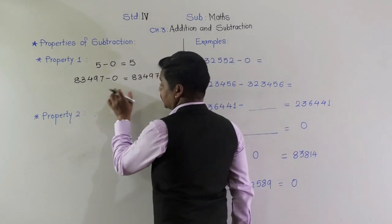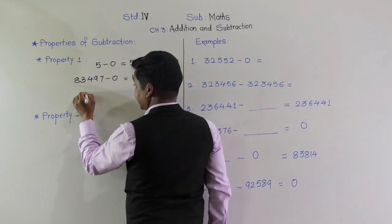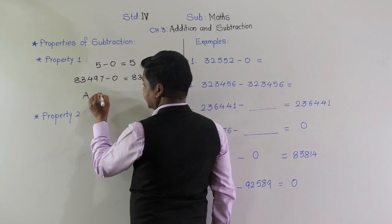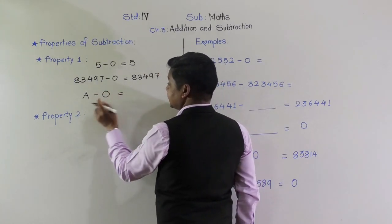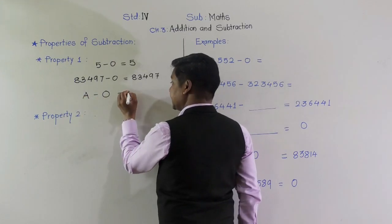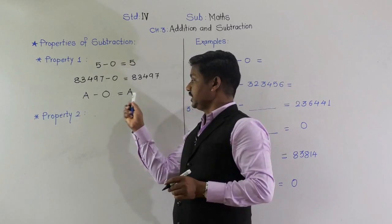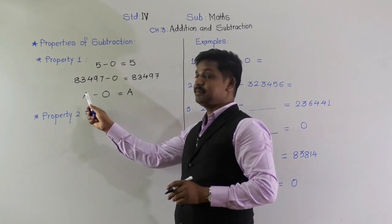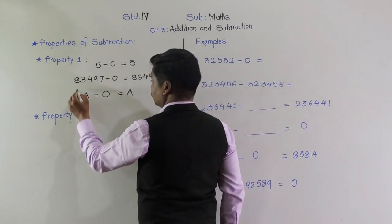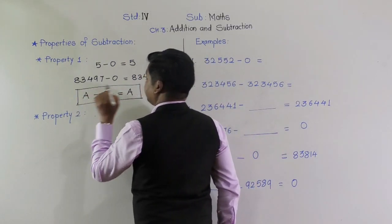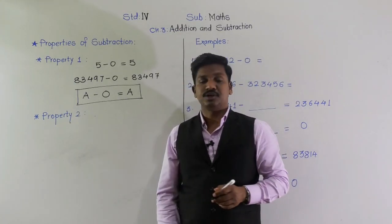If you want to make a general rule, we can consider 'a' to mean any number. Then a minus 0 equals a itself. So a minus 0 = a, where a means any number. This is the first property of subtraction. Now let us see the second property of subtraction.